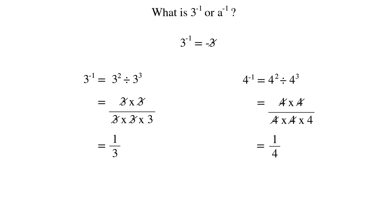So 10 to the power negative 1 will be 1 over 10. 100 to the power negative 1 will be 1 over 100 and so on. So a to the power negative 1 will be 1 over a. This is a general rule. Any number raised to the power negative 1 is 1 over that number.